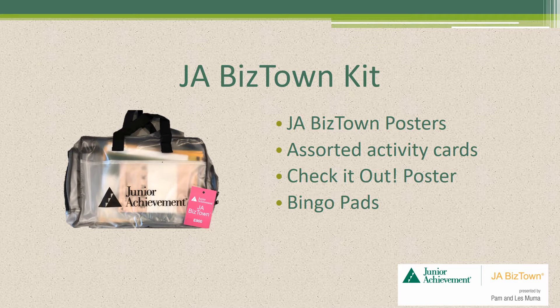In addition, you have your JA BizTown classroom kit. A classroom kit contains other materials necessary for teaching the curriculum. These items are non-consumable and should be used year after year — carefully store them when you have completed the JA BizTown curriculum. The classroom kit includes JA BizTown posters that are displayed during most lessons, assorted activity cards which are required with various activities, a check it out poster that should remain posted during the entire JA BizTown curriculum, and bingo pads which will be used during an application activity in Unit 1.